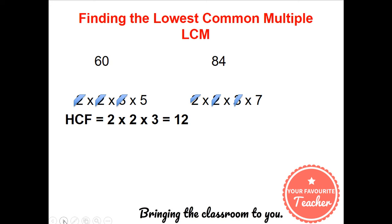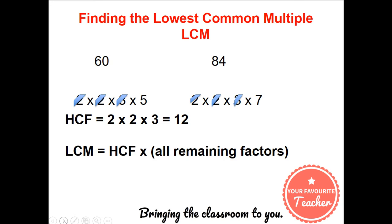We then need to find the lowest common multiple. To find the lowest common multiple we use the highest common factor and we multiply all the remaining factors after getting the highest common factor — in this case the highest common factor which was 12. So the lowest common multiple is 12 times 5 times 7 which is 420.